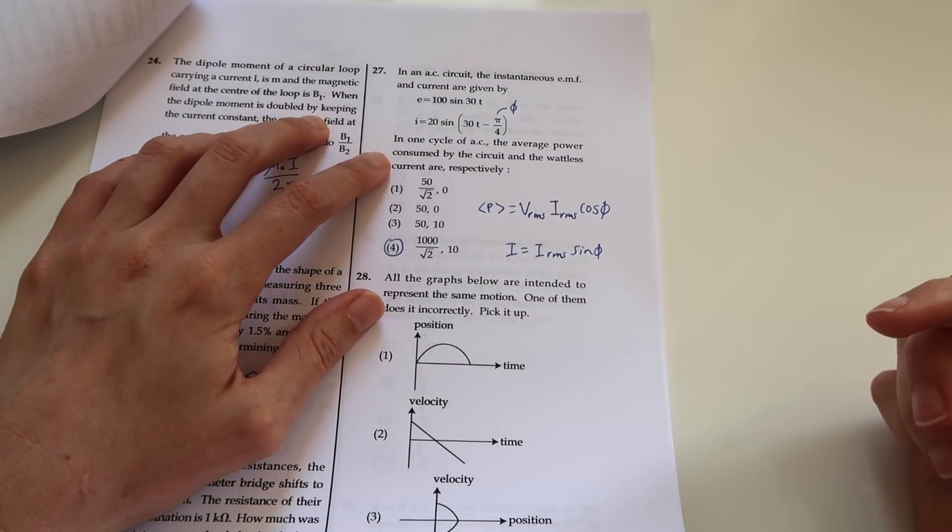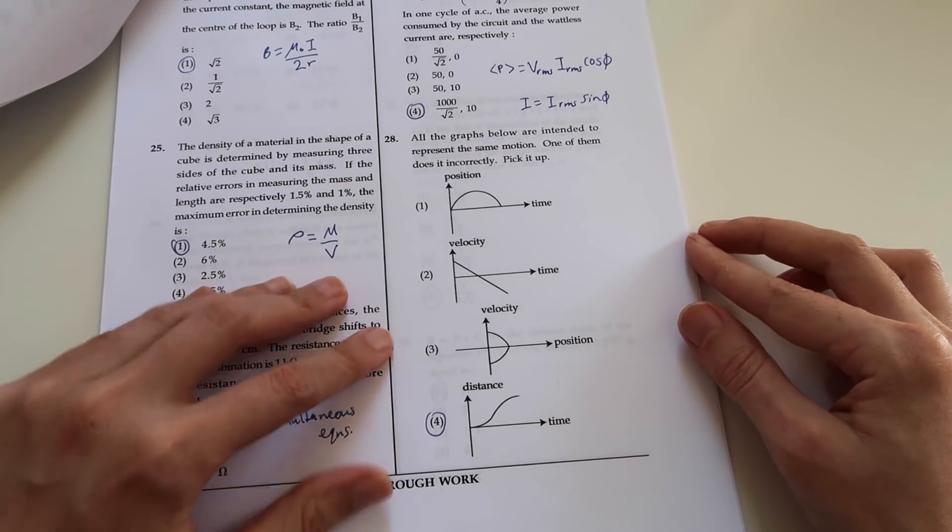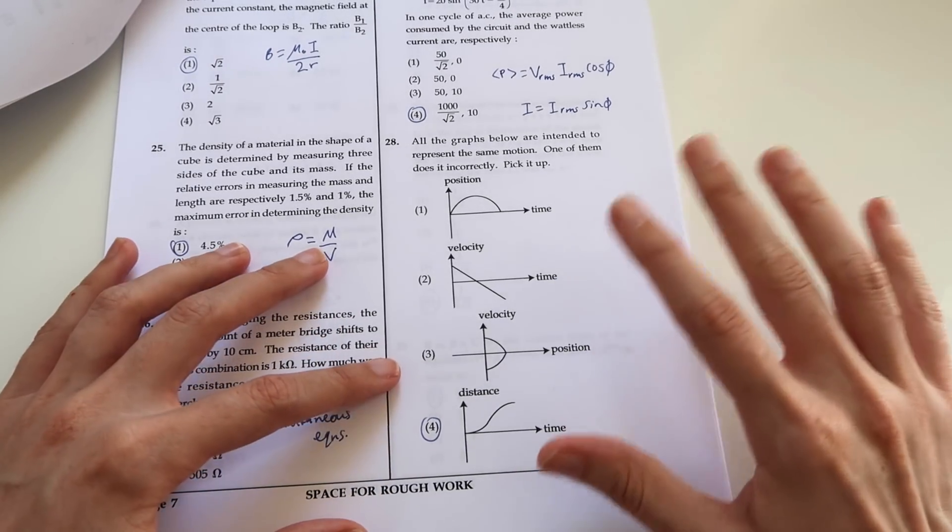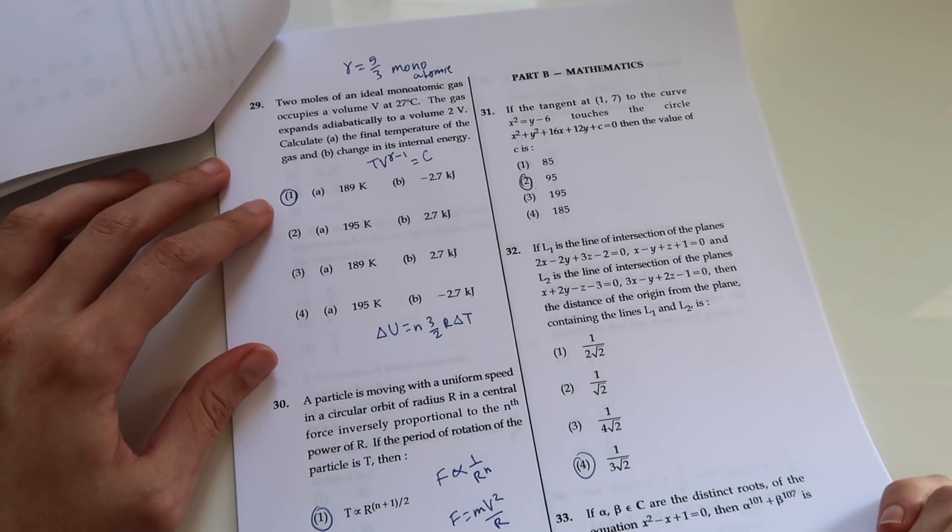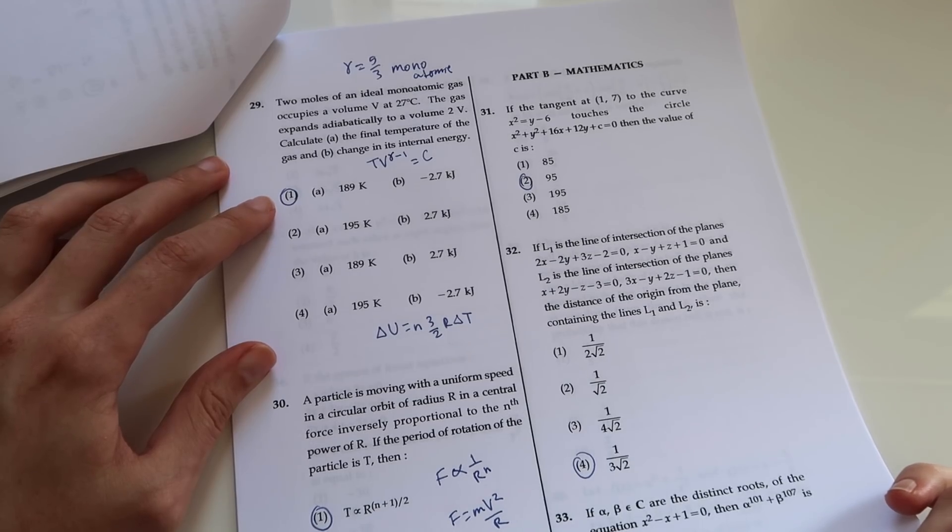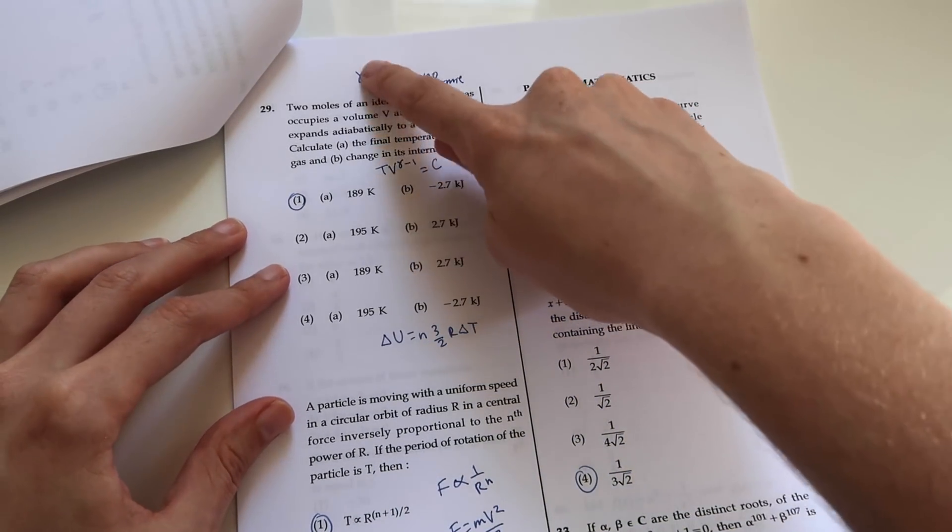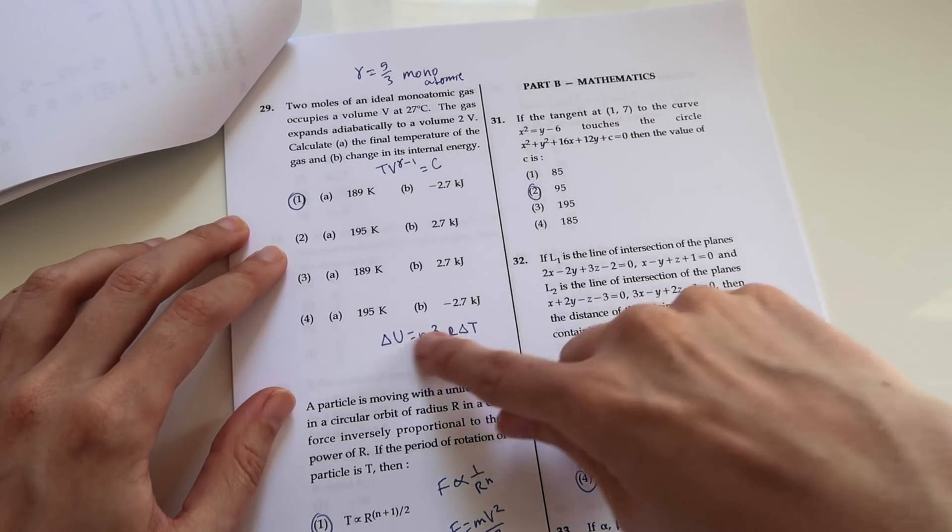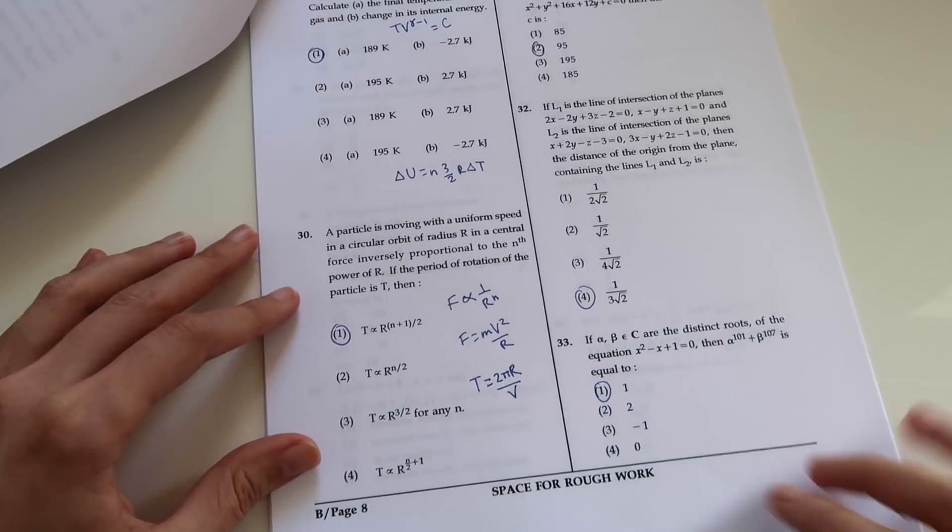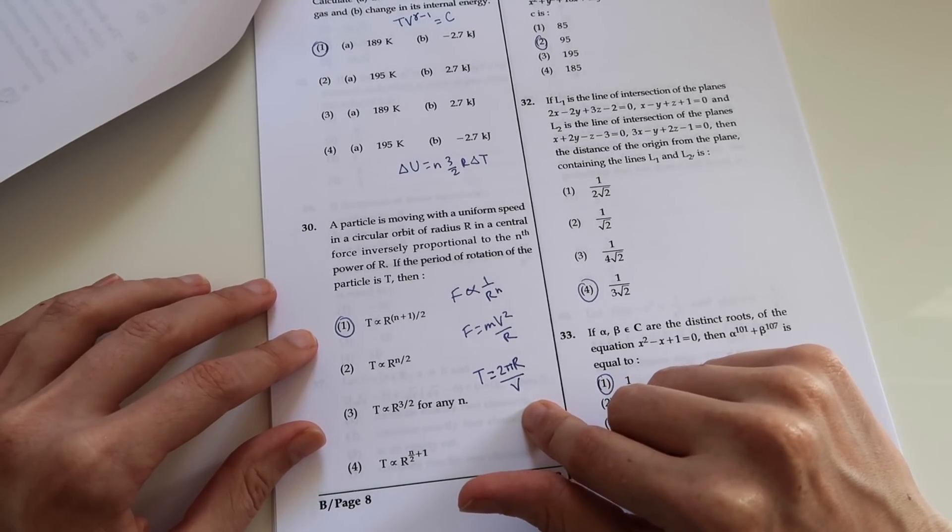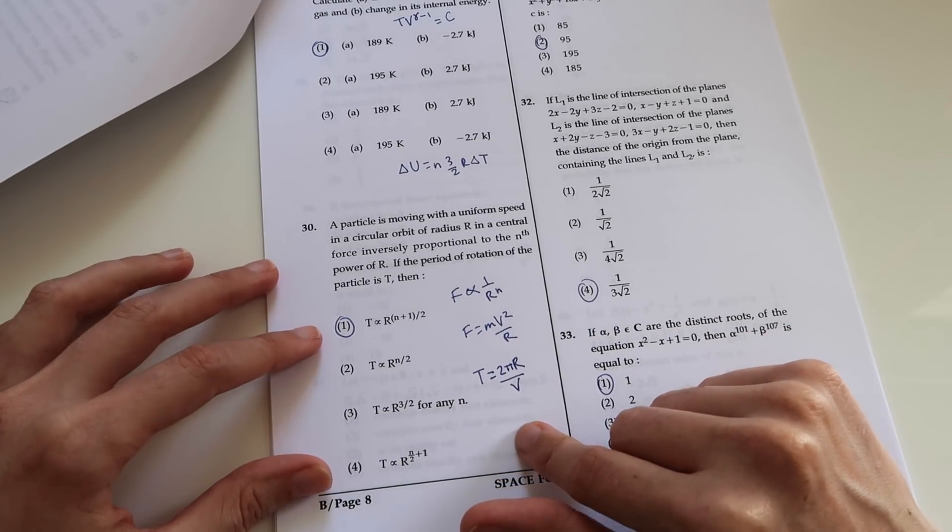Number 27, we've got an AC circuit. And 28, they've given us a few graphs here. They want us to find the incorrect one, and it's to do with just looking at them carefully, reading the axes, and knowing your kinematics. Nearly at the end, last page of questions here. 29, we have thermodynamics, and this I believe would be about the first law of thermodynamics. So some useful things like you'll need to get started knowing what our gamma factor is and knowing some of these equations here, like the change in internal energy and the temperature. Number 30, our last physics question, and this one is about circular motion, so finding a relation between a few different variables and seeing what are proportional.